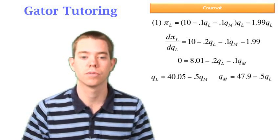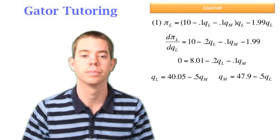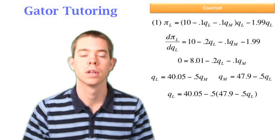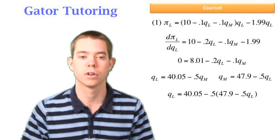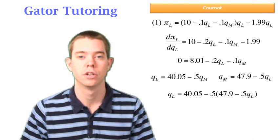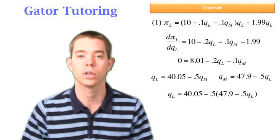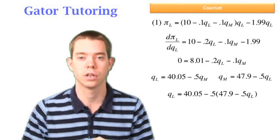Well, we know Matt's reaction function was this, so we can use substitution to solve for QL and QM. Because again, we're going to need to solve for QM in both cases, because if you take a look at Larry's profit function, there's a QM in that. So to find Larry's profit, we not only need to find QL, we also need to find QM.